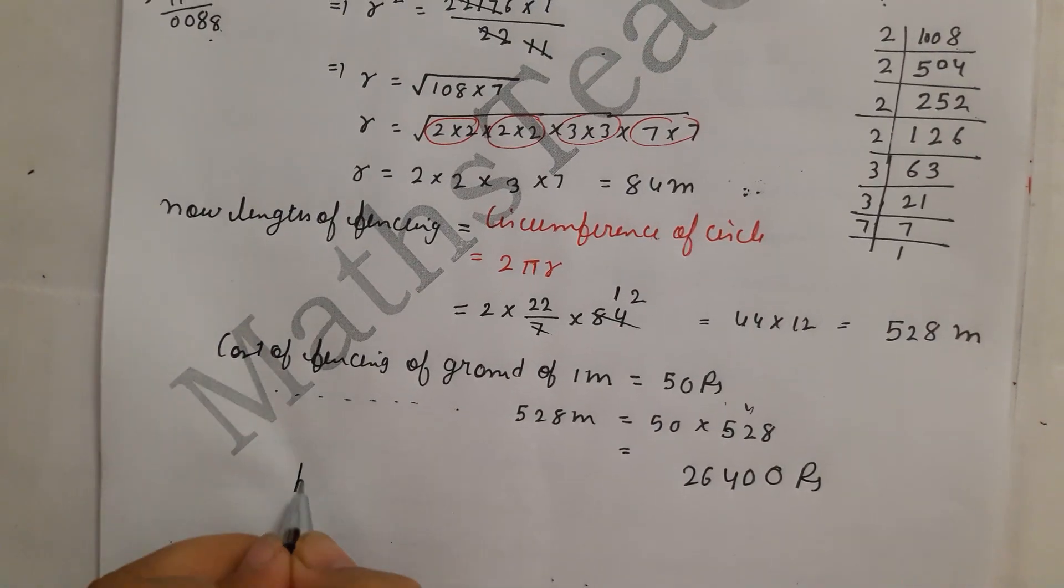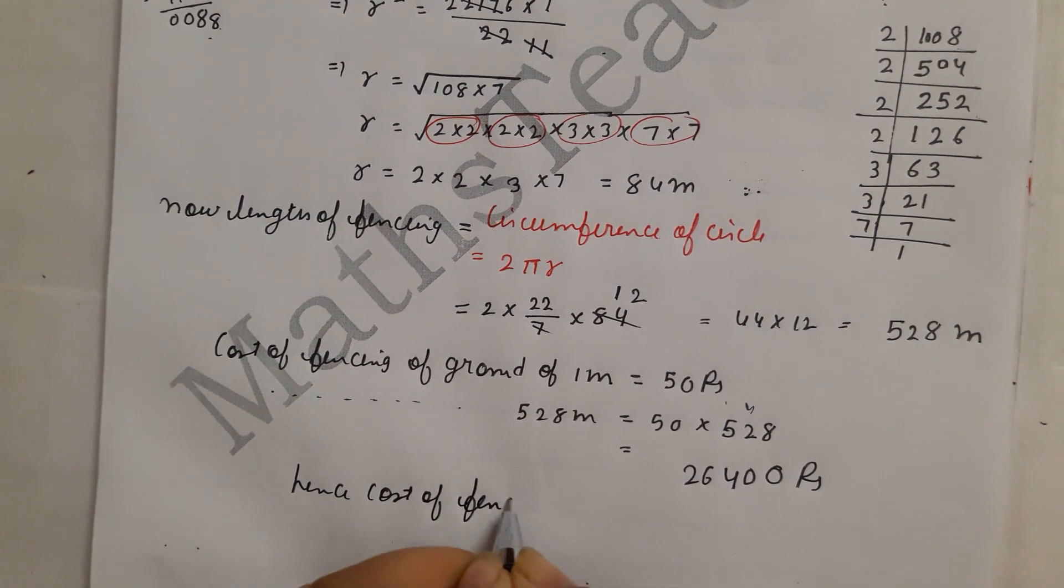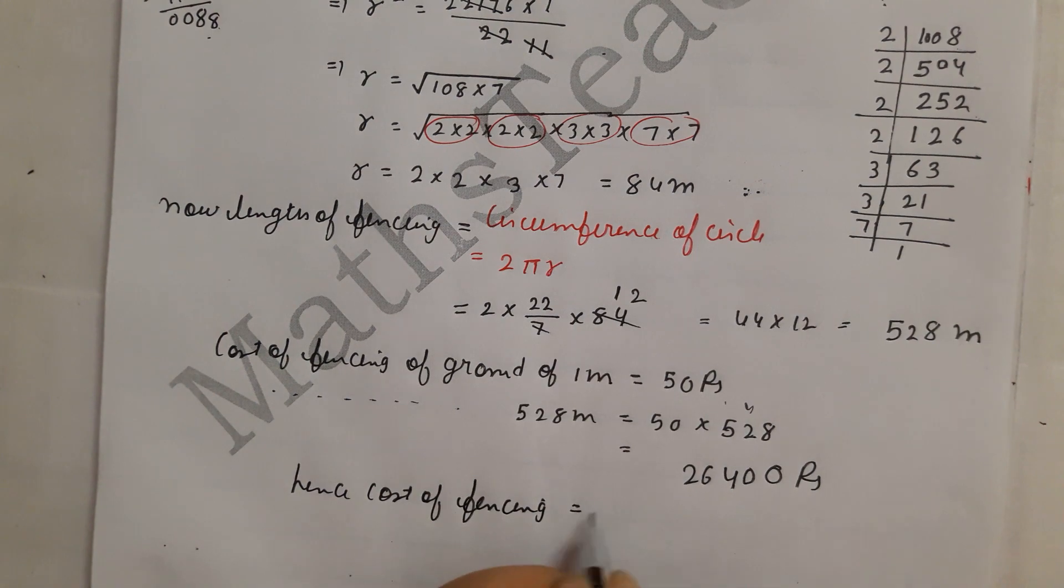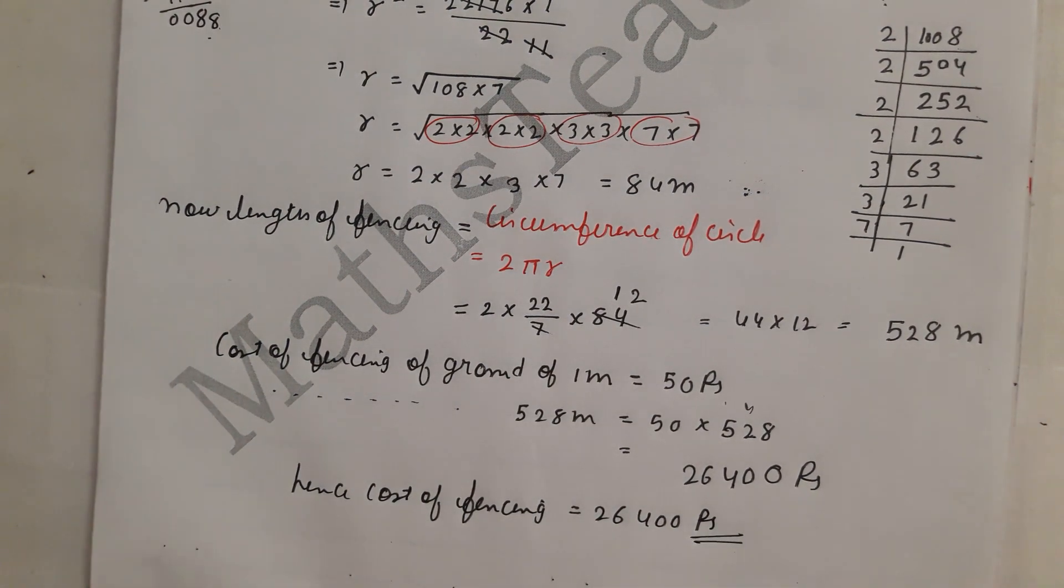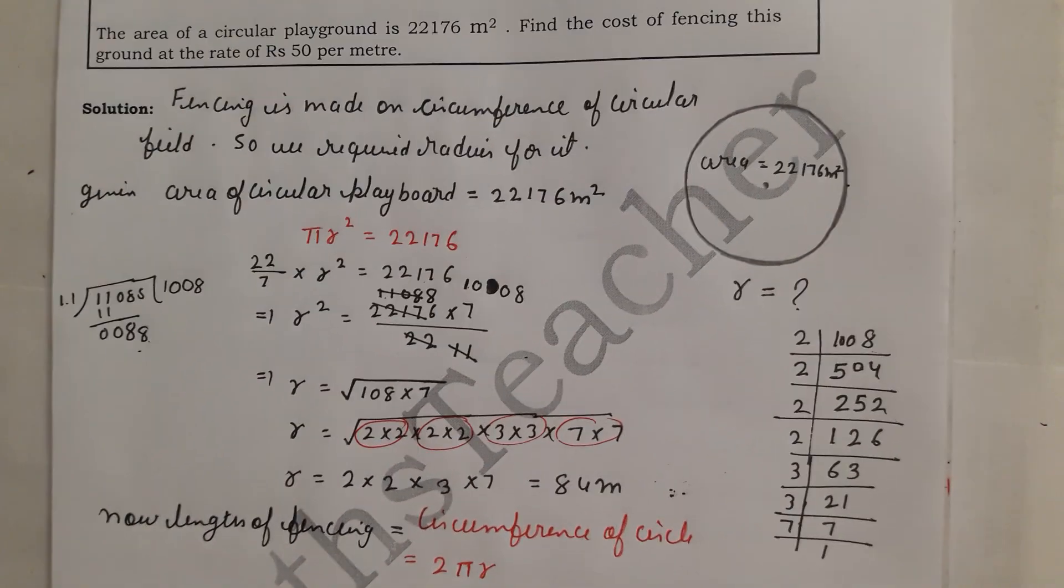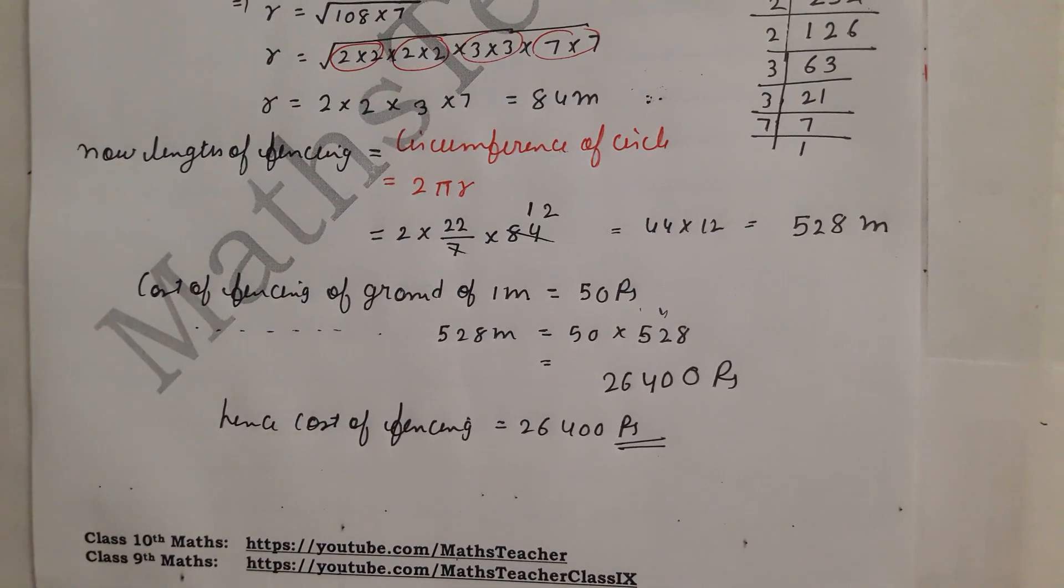Hence, cost of fencing equals 26,400 rupees. This is how to solve the question. If you know the formula, you can solve the question. If you have any doubts, please comment in the comment box. Thank you.